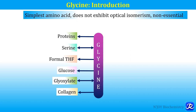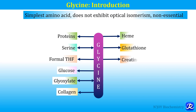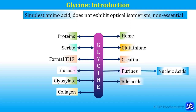It is a glucogenic amino acid because glucose can be synthesized from glycine. Glyoxylate can be formed from glycine as well as glycine can be synthesized from glyoxylate, so that reaction is also reversible. Glycine is incorporated in the structure of collagen. It is involved in the synthesis of heme, glutathione, creatine, purines, and ultimately nucleic acids. It has an important role in the conjugation of bile acids and is involved in detoxification reactions.